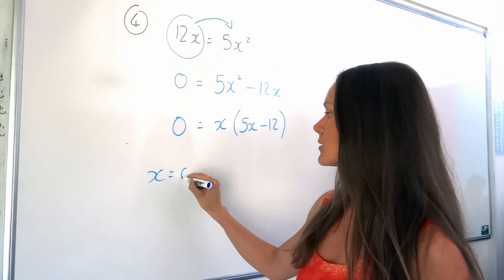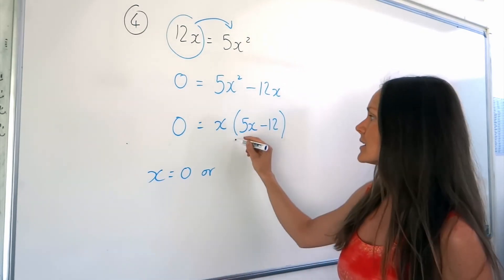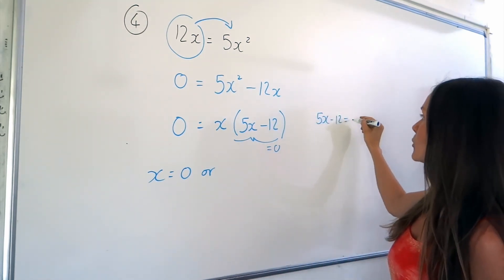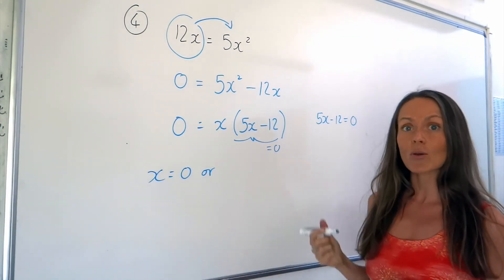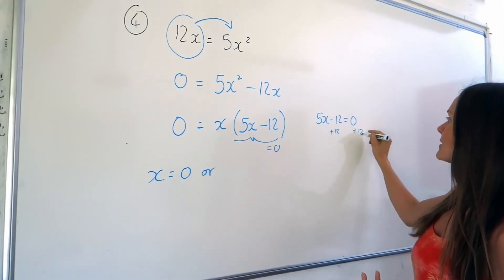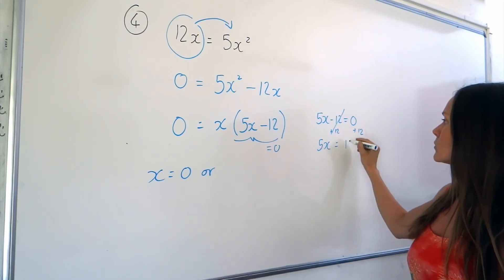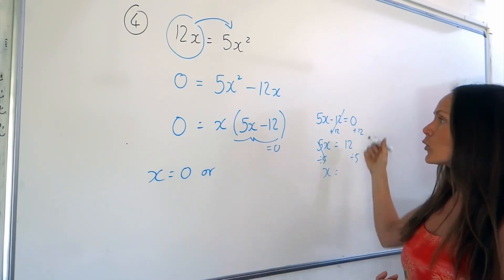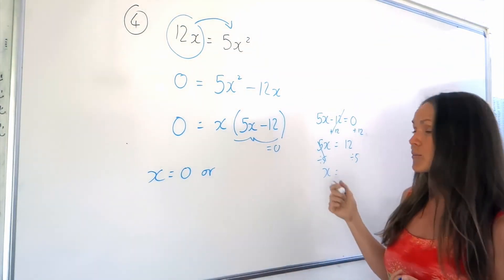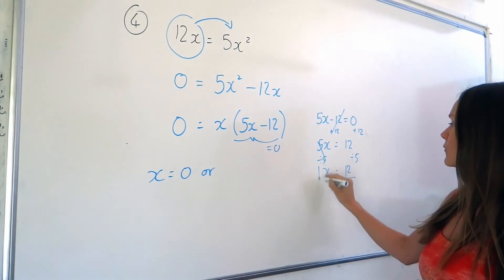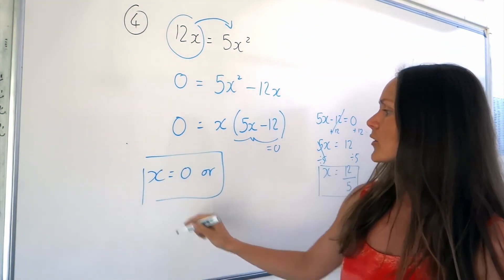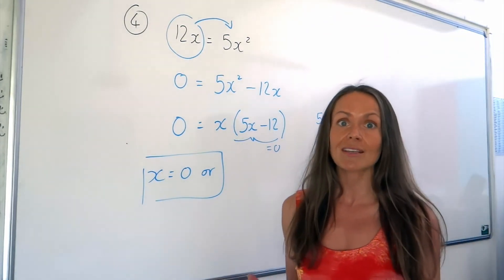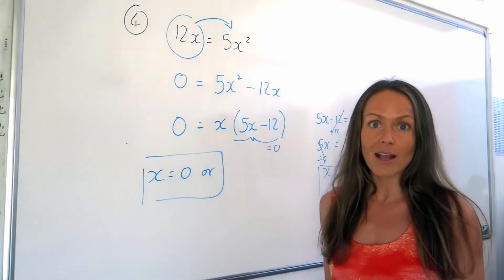The other solution is if we imagine this bracket is equal to 0. So I'll write: 5x minus 12 equals 0, and solve that linear equation. I add 12 to both sides — the left side cancels — so I'm left with 5x equals 12. Then I divide by 5 on both sides to find x. If you're not very good at solving linear equations, that's something you can practise. So that gives x equals 12 over 5. So we've got x equals 0 or x equals 12 over 5. Remember: when solving quadratic equations, it must equal 0 before you can do your factorising and solving.